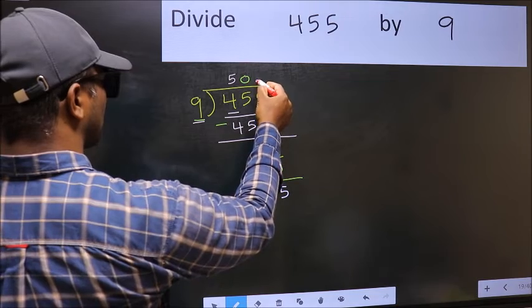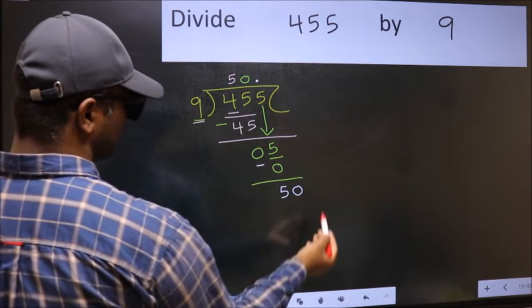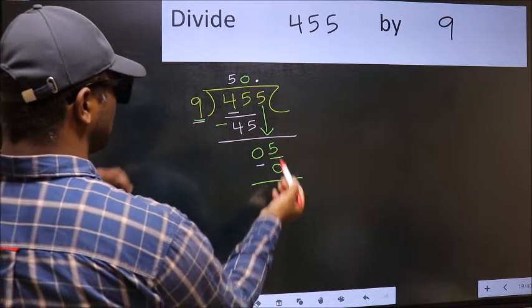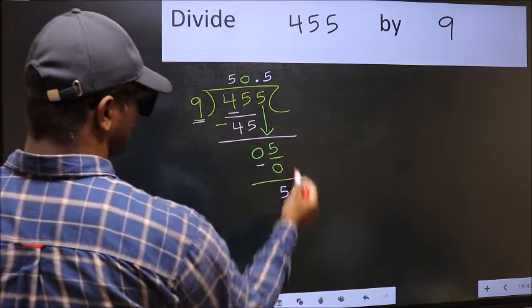Over here, we did not bring any number down, and 5 is smaller than 9, so now you can put dot and take 0. So 50. A number close to 50 in 9 table is 9, 5, 45.